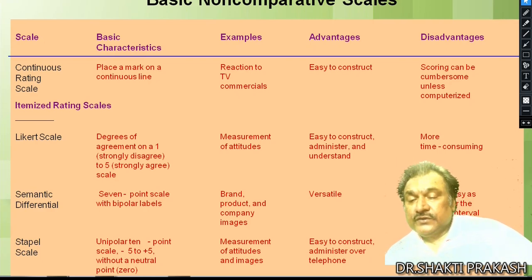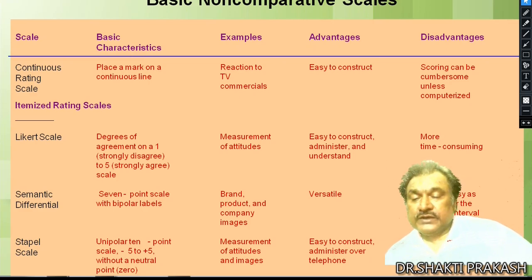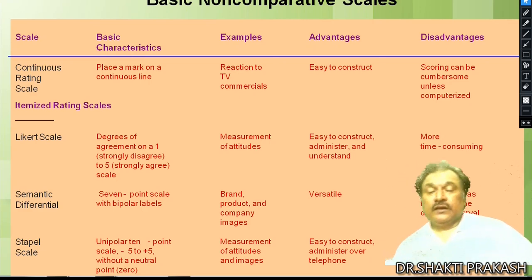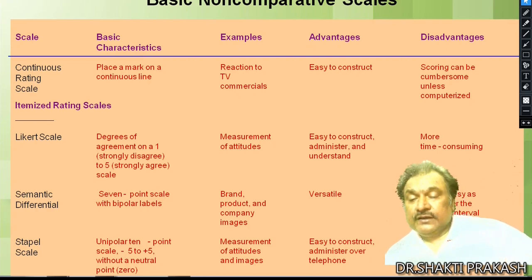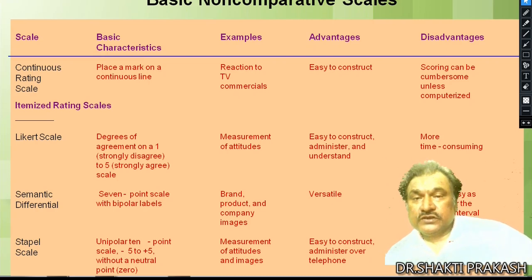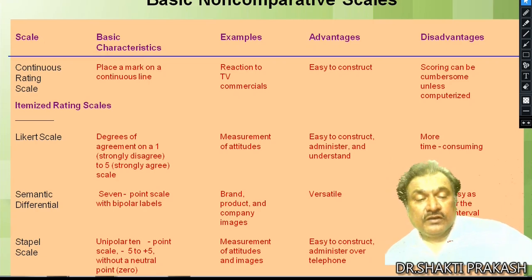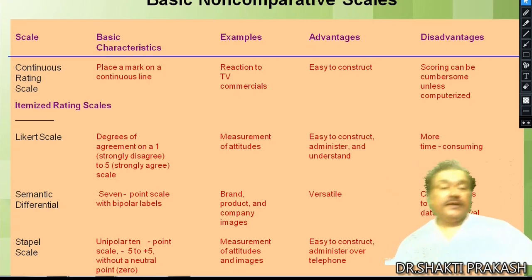The Staple scale is a unipolar 10-point scale ranging from minus 5 to plus 5, without a neutral zero point. It is used for measuring attitude and images, and is easy to construct and administer over telephone. The disadvantage is that it can be confusing and difficult to apply.